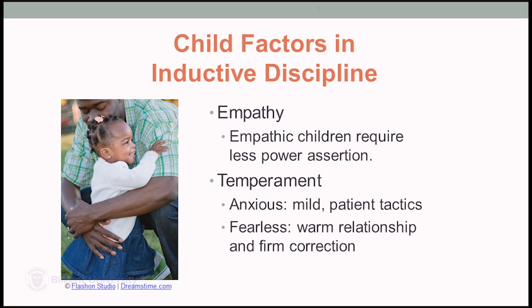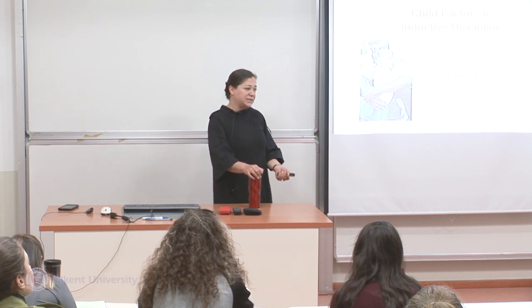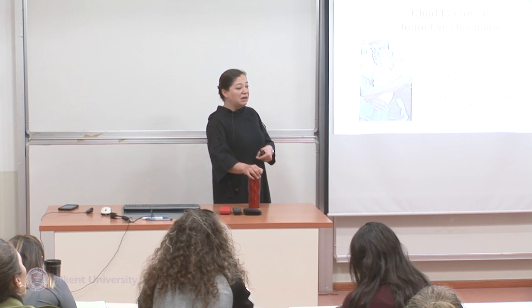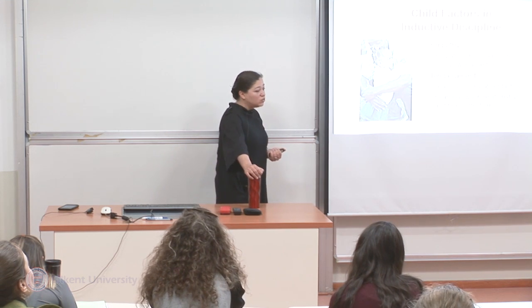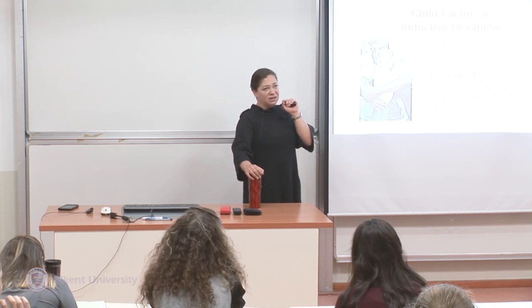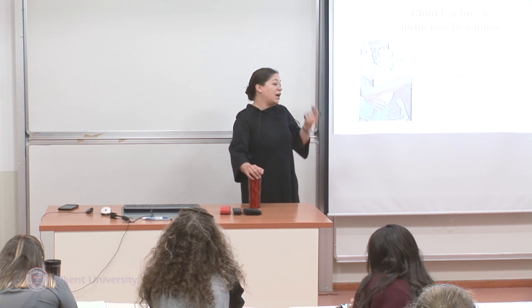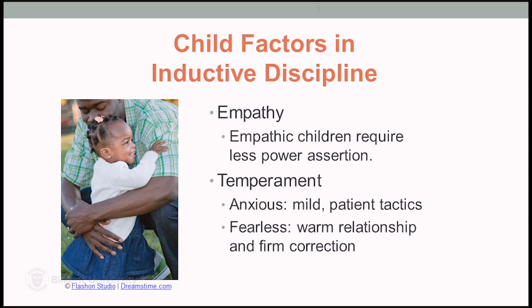There are child factors in inductive discipline — it's not a prescription or recipe for all, because children show individual differences from very early ages, including temperamental differences. Those children who are naturally empathic require less power assertion by their parents — more subtle warnings and explanations actually help them, and they don't require big statements. Anxious children benefit most from mild and patient tactics. For fearless children, firm tactics should be in place — but always nested in the context of a warm parent-child relationship.